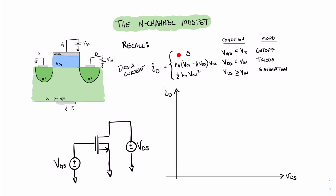First, in the simplest version of the equation, we have zero current if there's no channel — this is the mode we call cutoff. As we increase VGS and create a channel, the first mode we enter is triode. However, when we add a little more voltage at drain to source, the channel is no longer trapezoidal but triangular, with a pinch-off point right at the drain. That happens when VDS is exactly equal to the overvoltage, and plugging that into the triode equation gives us the new saturation equation.